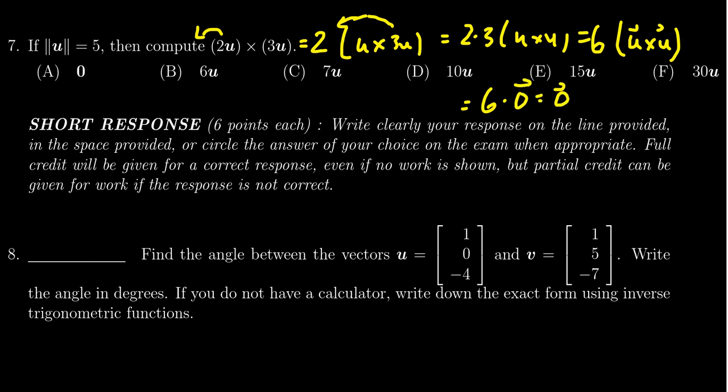For which anything times the 0 vector is going to be 0, and this tells us that the correct answer would be a, the 0 vector. And so the length of the vector being 5 is just a red herring. It's superfluous information that doesn't actually help us with the calculation here.